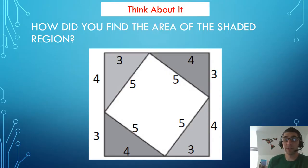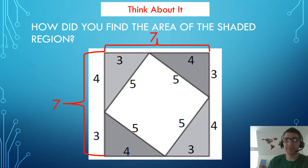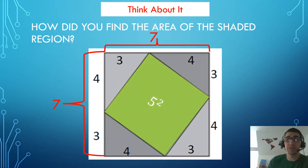There's another way that you could have found the area of the shaded triangles, and that's by looking at the whole square as a 7 by 7 square, which has an area of 49, and then subtracting the inside square, which has an area of 5 times 5, or 25. And then you would have gotten 49 minus 25, which is 24 square units.